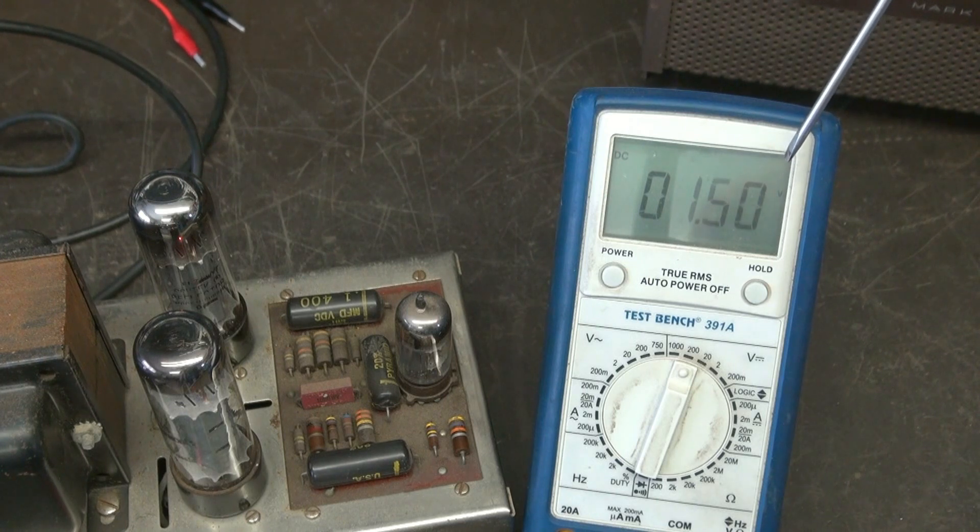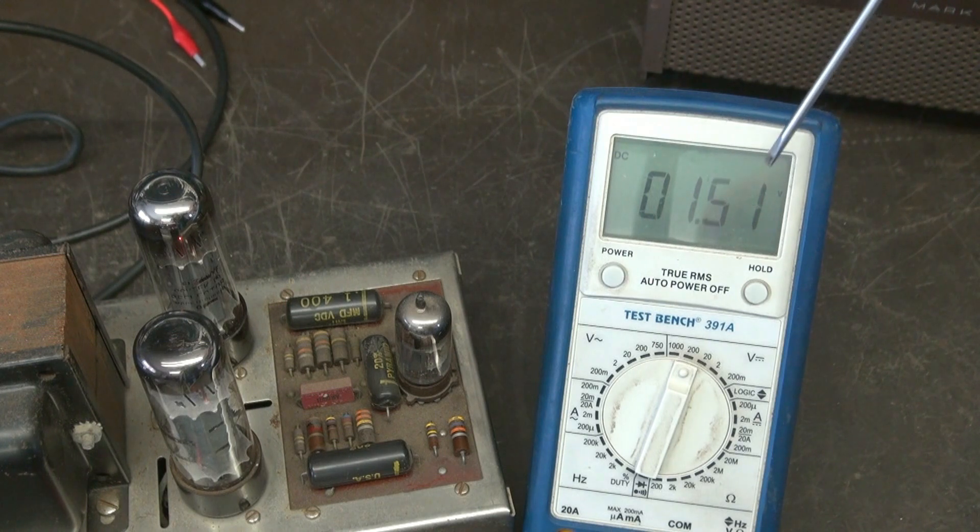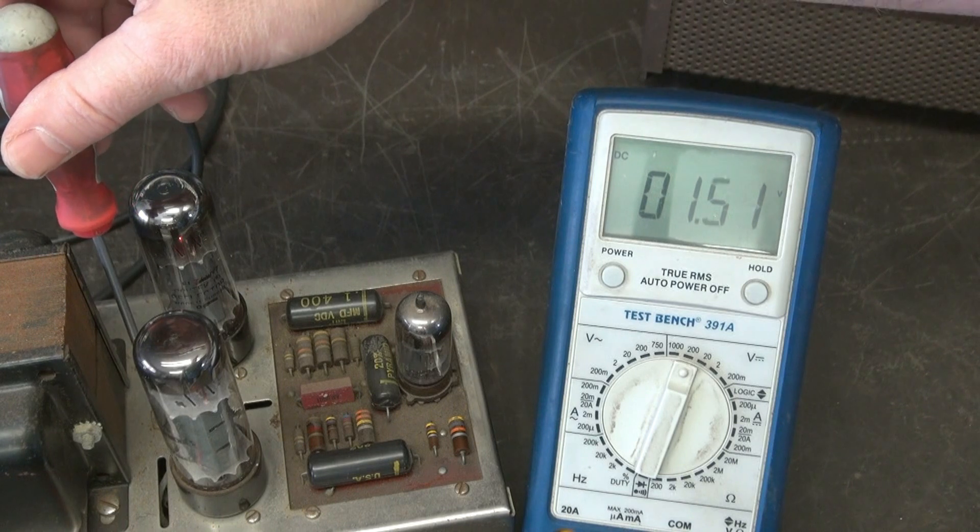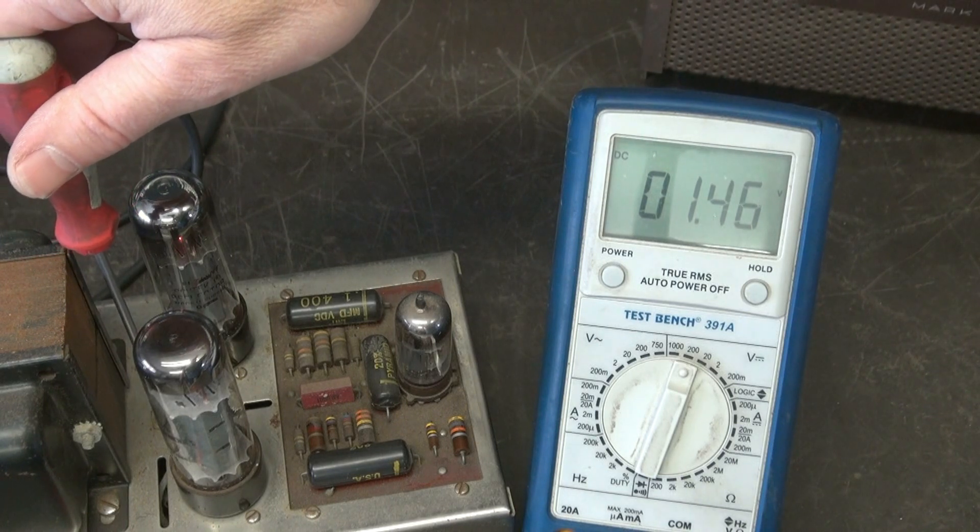That shouldn't be happening. There's no signal applied. This should be stable as can be. And it's not. It's also dancing around. I know the sure sign of leakage. As long as we're under the 1.5, we're not going to burn up our tubes.